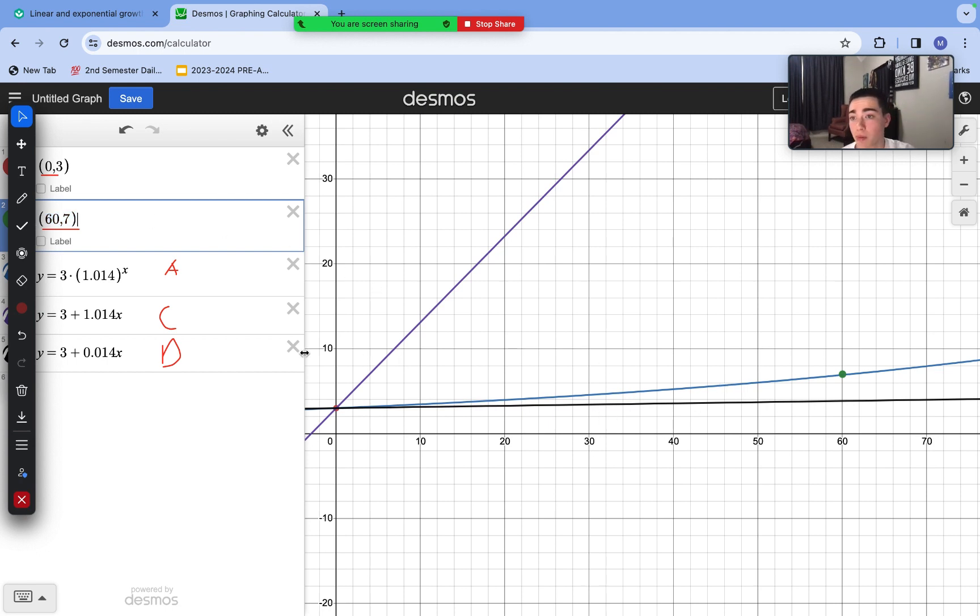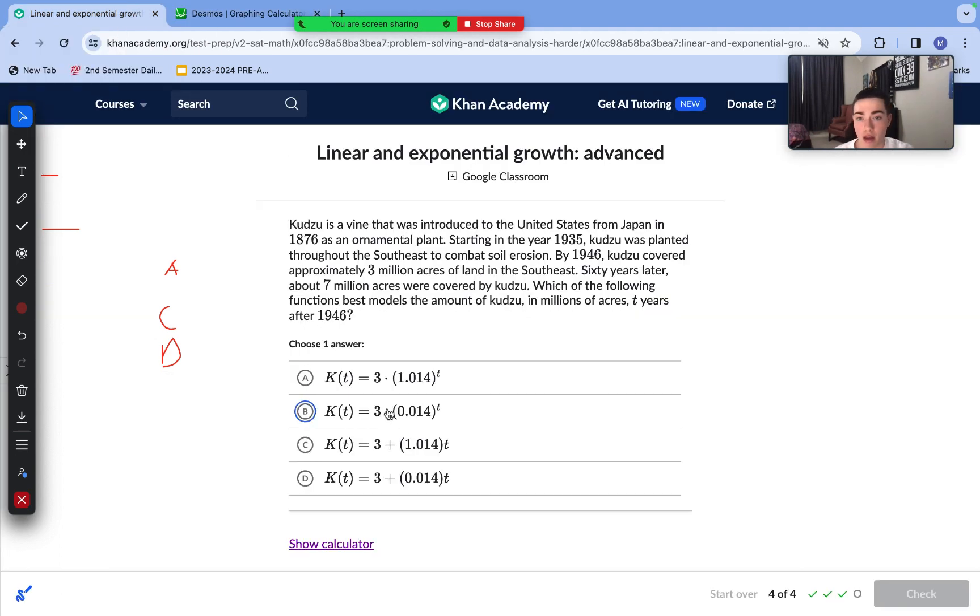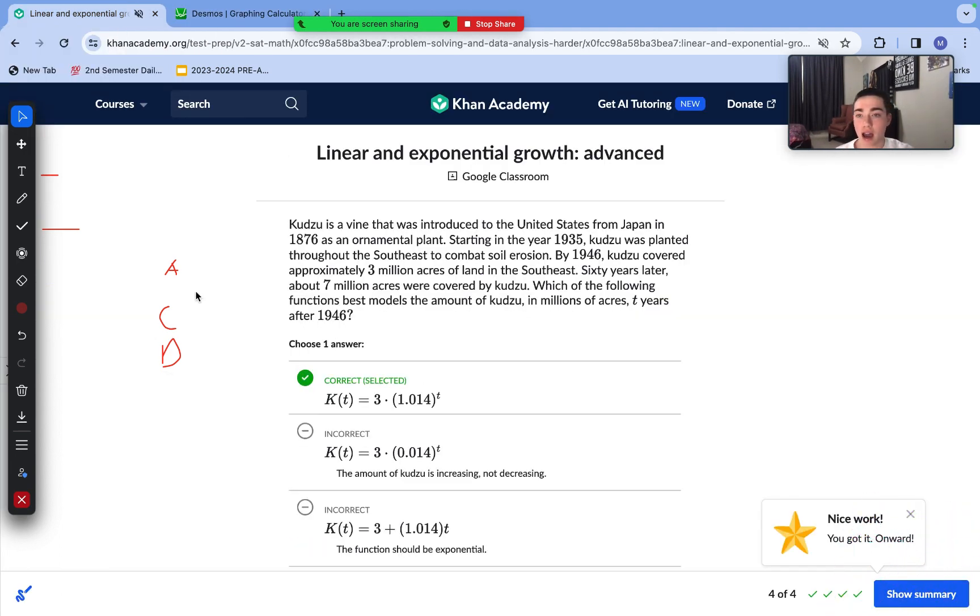This means that our blue function or our exponential function right here, function A, is going to be correct as it fulfills both of those coordinate pairs. So answer choice A is correct here.